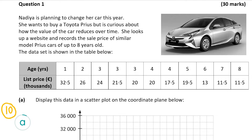Now we're going to look at question one part A, which is worth 10 marks. This asks us to display the data in a scatter plot on the coordinate plane. A scatter plot is when we have two variables and we plot all the coordinates — it's useful for finding if there's a correlation between two variables.